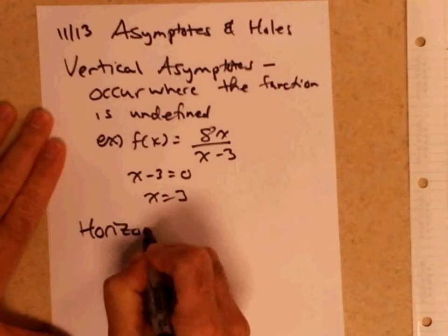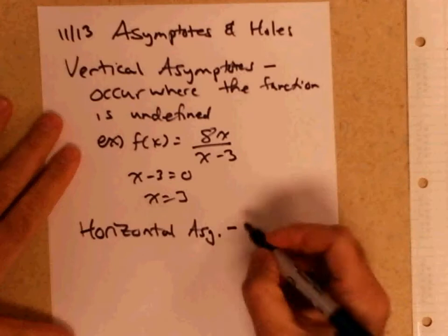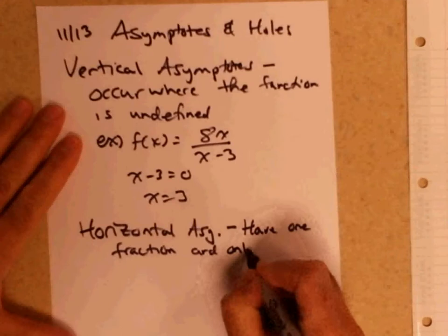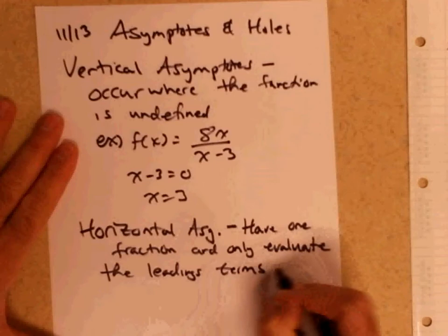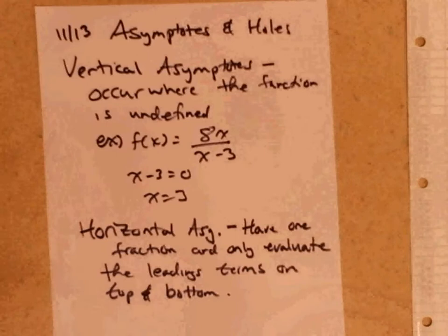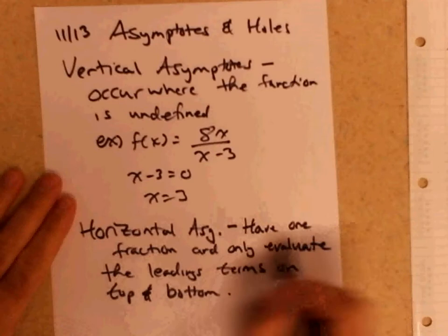Now for horizontal asymptotes, there are three conditions. To do horizontal asymptotes, you have to set the problem up. The easiest way to do this is you should have just one fraction and only evaluate the leading terms on top and bottom of the function. If they have multiple fractions, you have to get a common denominator and add the two of them together so you just have one fraction. It's really important.